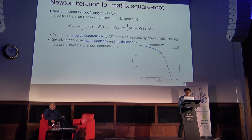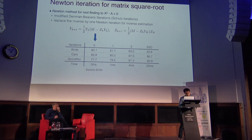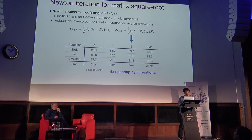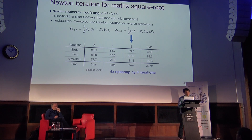The good thing is this iteration only involves matrix addition and matrix multiplication, which are well-supported on modern GPUs, so it is very fast. The table reports approximation quality in terms of recognition accuracy. Zero iterations corresponds to the original bilinear CNN method. Remarkably, with only a single iteration, the model improves by 1.8% accuracy. The model converges quickly after five iterations and works as accurately as the SVD implementation. Moreover, it is five times faster than SVD, and we observed more than ten times speedup in our Python implementation.